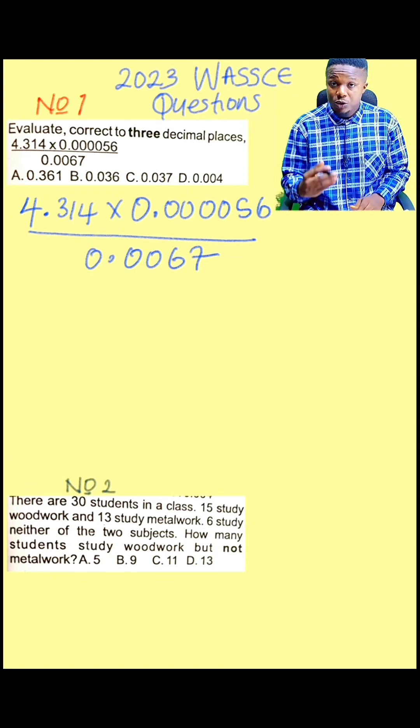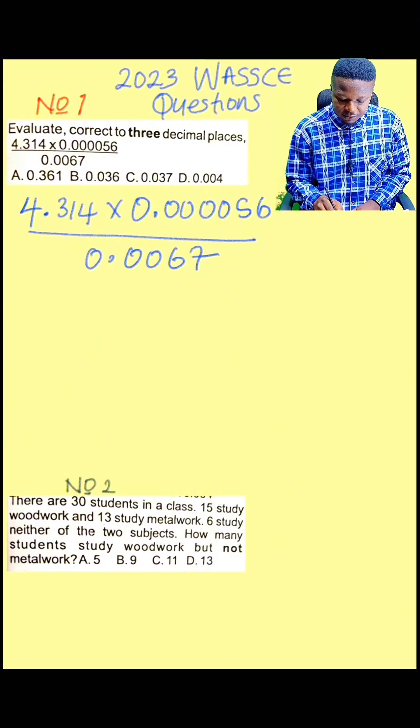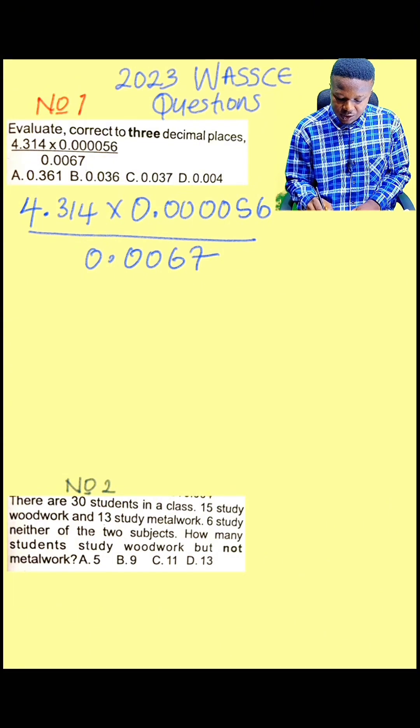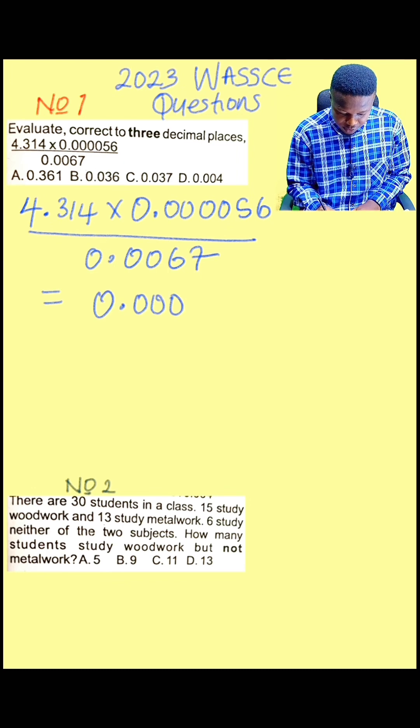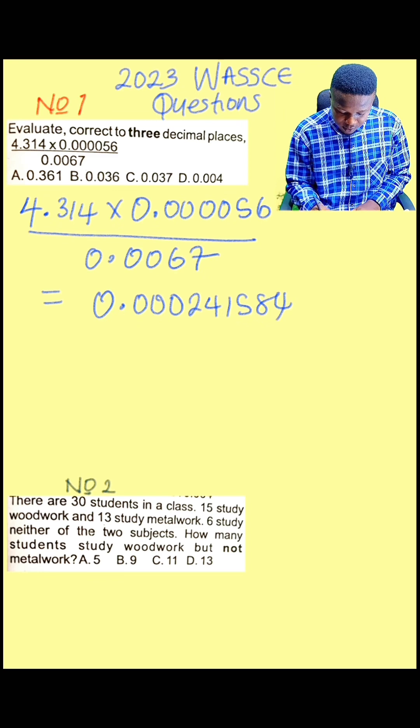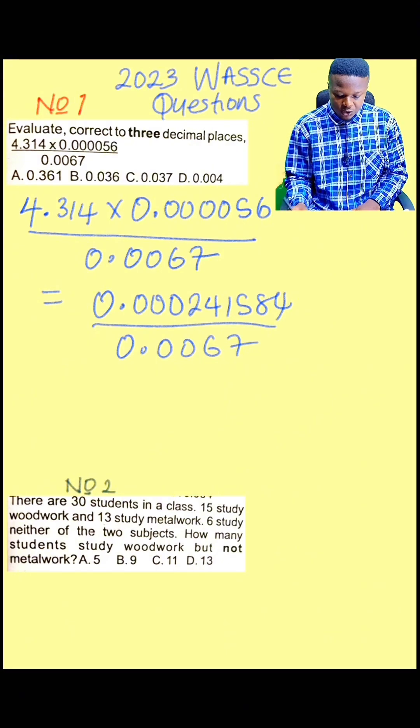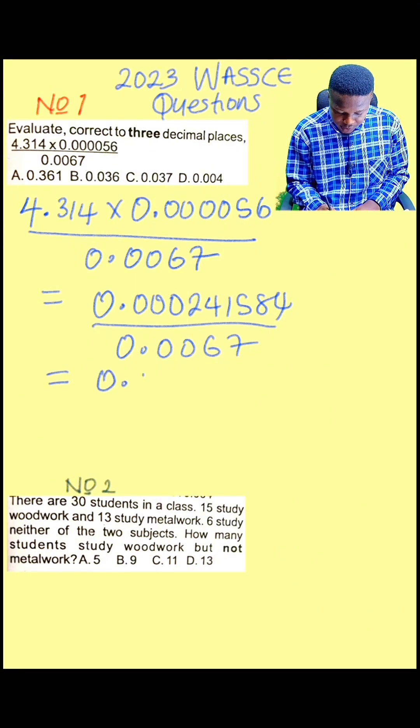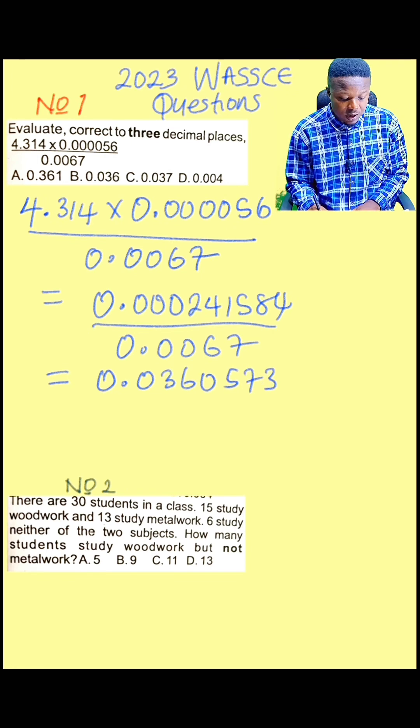This is what we have. With your calculator, multiply the numerator 4.314 times 0.00056. This will give us 0.000241584 then divided by 0.0067. When you divide this again with your calculator, you will get a value of 0.036057313.